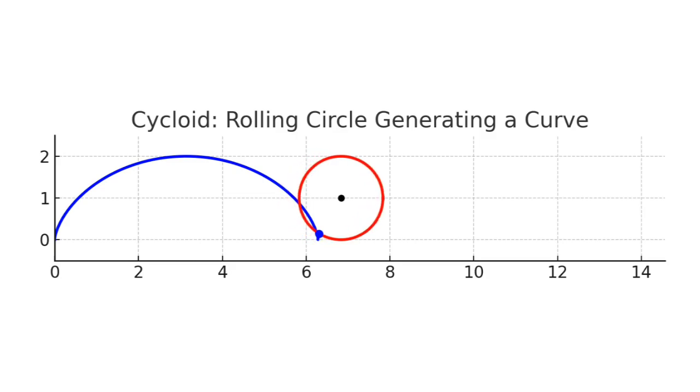That arc width is always equal to the circumference of the circle. The rolling circle is called the generating circle, and the straight line is called the directing line.